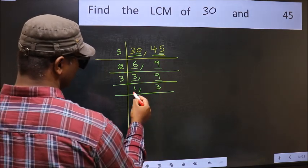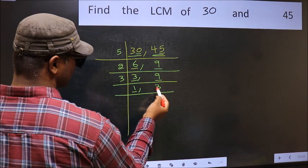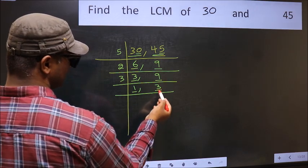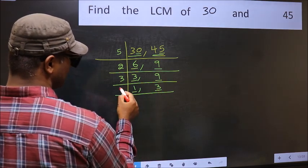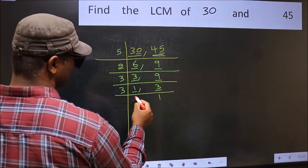Now we got 1 here, so focus on the next number, 3. 3 is a prime number, so 3 times 1 is 3.